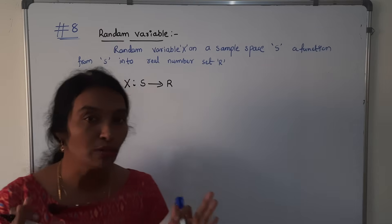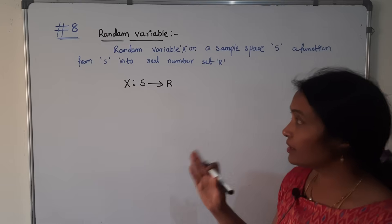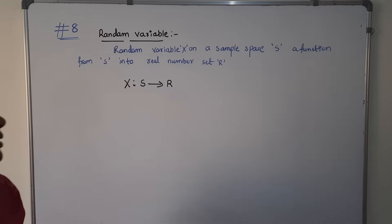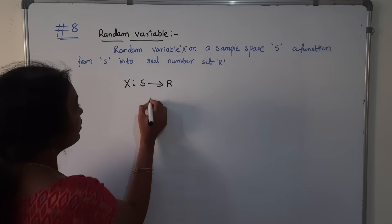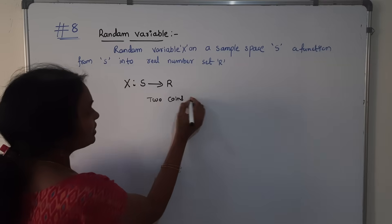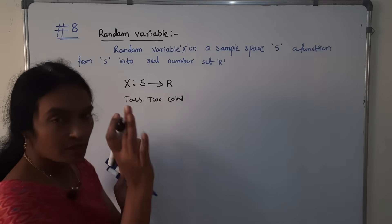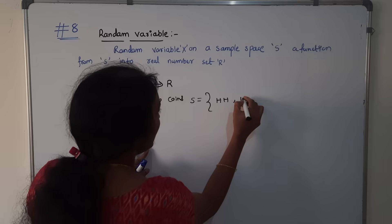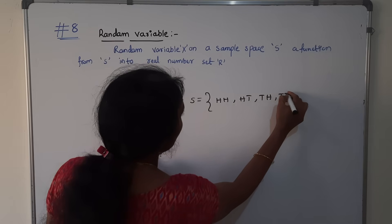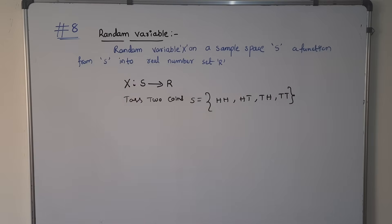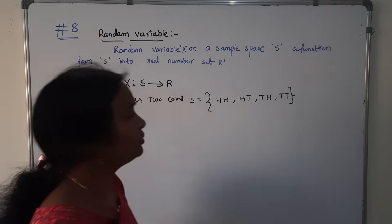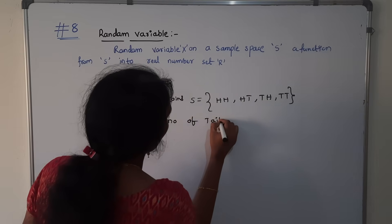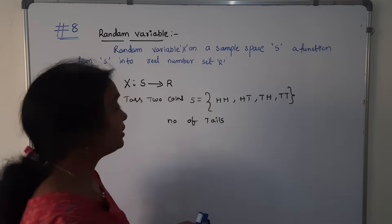Random variable is of two types: discrete random variable and continuous random variable. To illustrate, suppose we toss two coins. We draw the sample space. If we define X as the number of tails, the number of tails is the random variable X.